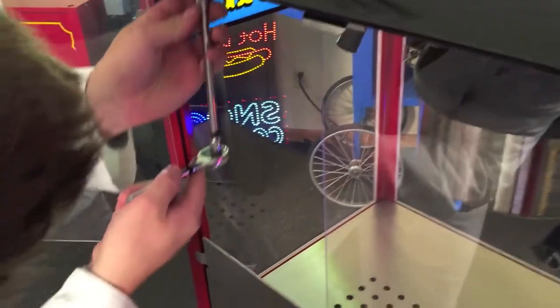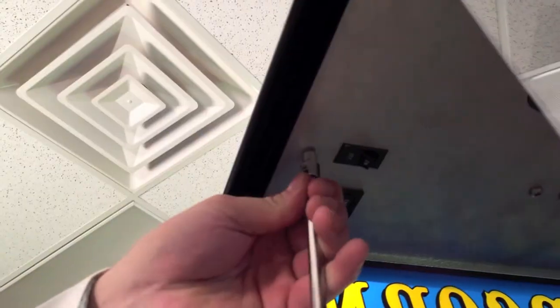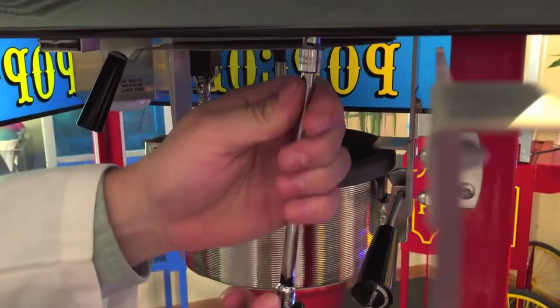Then, open the door and unscrew the two self-tapping screws on the back side of the machine, the operator's side, to fully release the canopy.